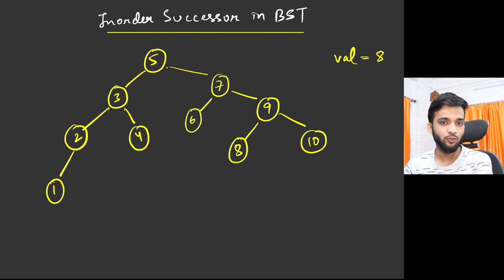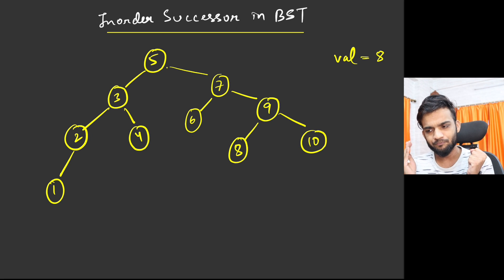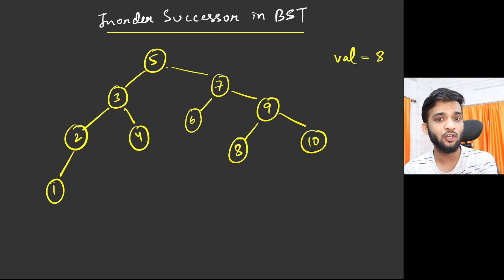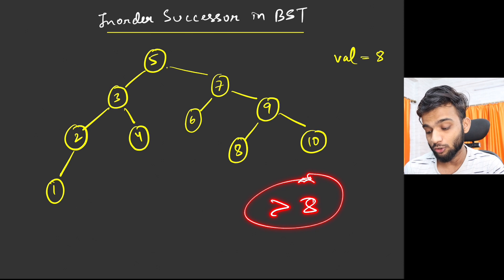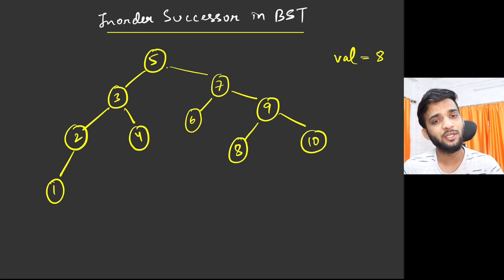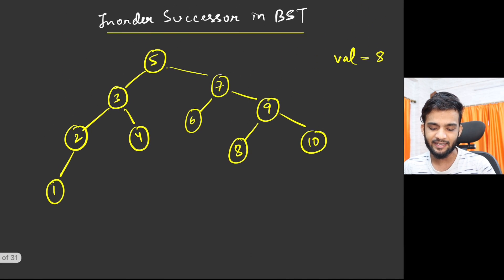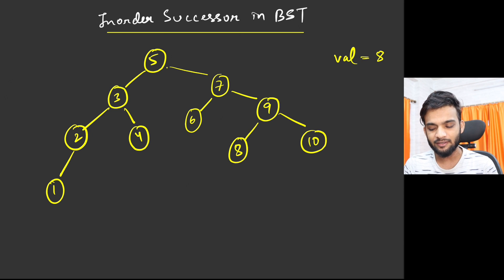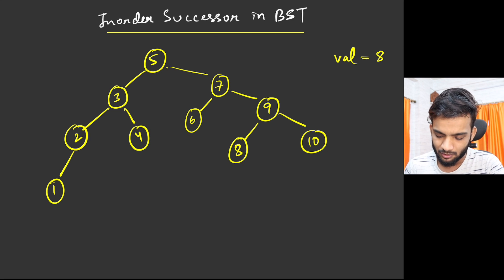A binary search tree has a special property: the height is generally much smaller than the total number of nodes, unless it is a skew tree. So the efficient approach says: I know I need the value greater than 8 — in this case it's 9 — so why not store a variable called successor, assigned null initially.